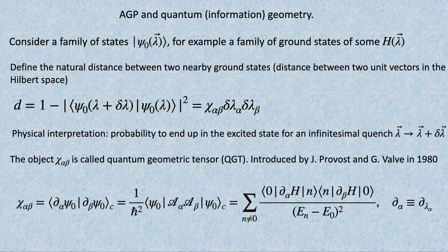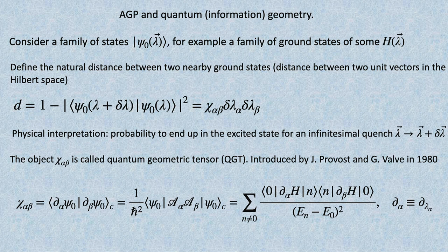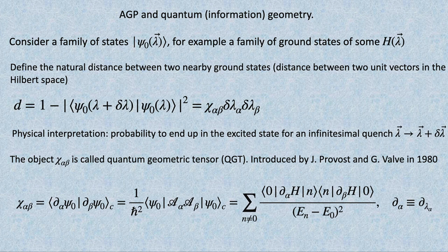What is this object? Skipping some steps, this distance is quadratic in lambdas, so it should involve two derivatives of psi. It's easy to see that this is the connected part of the overlap of derivatives. It's connected because a global phase rotation of psi doesn't change anything, so the distance is not affected. The connected part means I subtract the product of averages—in mathematical language, it's the same as covariance.